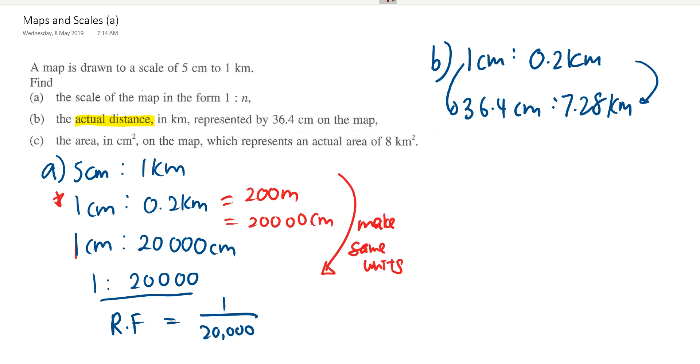So for C, which is the most important part of the question, the area in cm square now convert to map. So there's two kinds of scale, I think I should write it.